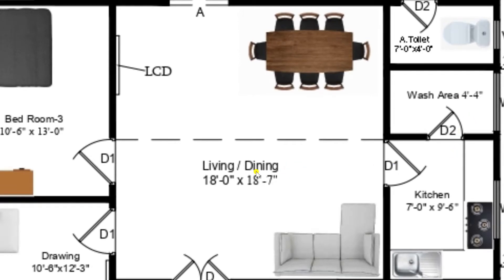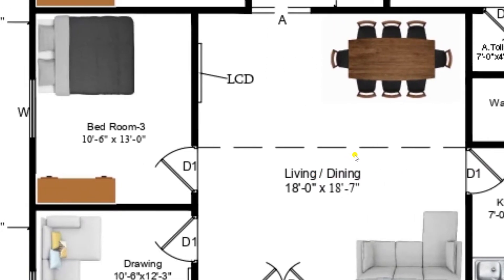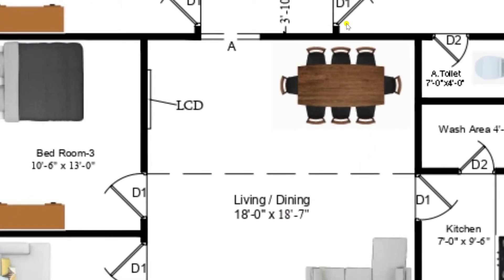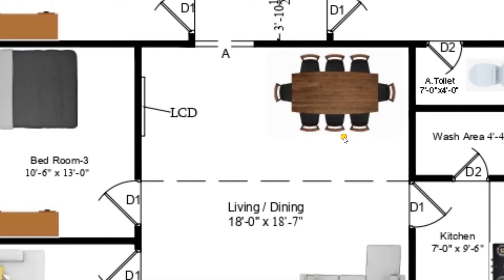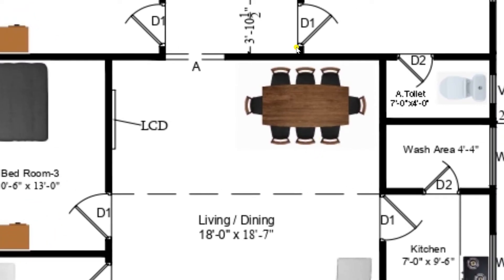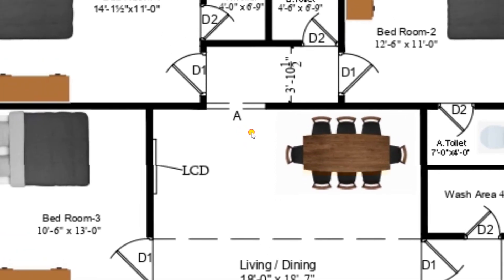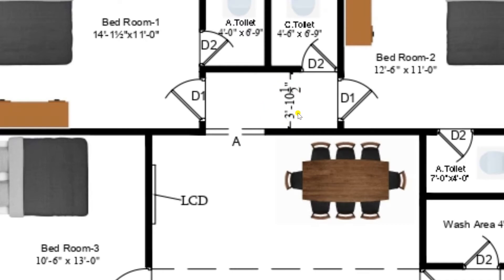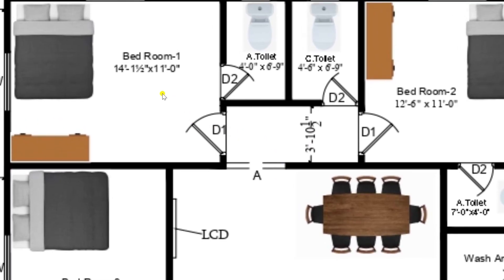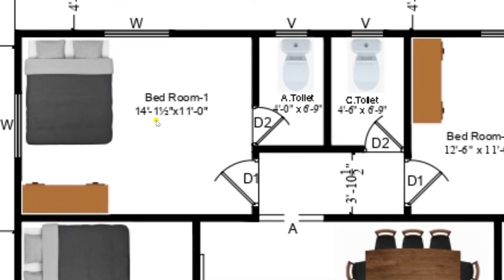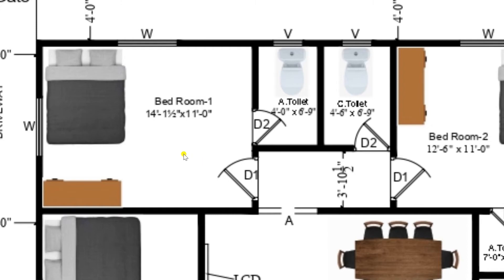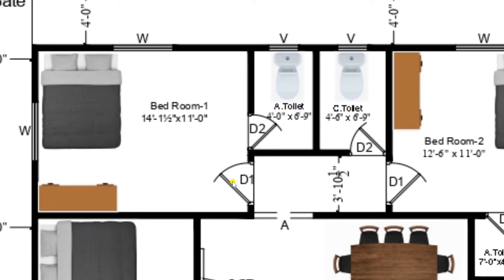Returning back to the living or dining room and entering into the dining hall — a dining hall is provided with an LCD as well, so you can watch movies and other activities. From the dining room I am entering into the lobby through an arch. The lobby is of size 3 feet 10 inches. Entering to the left hand side is the master bedroom of standard dimension 14 feet 1 inch by 11 feet, provided with one bed, one wardrobe, and two windows, with an attached toilet of 4 feet by 6 feet 9 inches.